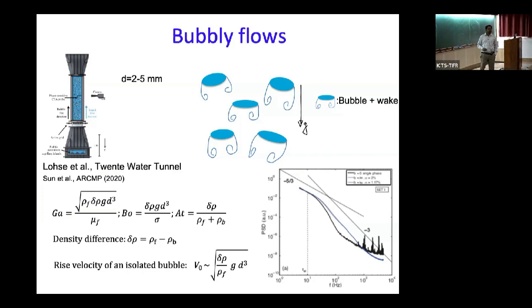For the air-water system, the Atwood number is 0.999—the density difference is very large. The Bond number is typically order three to five, and the Galilei number is typically 300 to 400 in experiments. If no bubbles are present, the spectrum falls off fairly steeply. With bubbles present, the spectrum raises and you see something like a minus-three scaling.